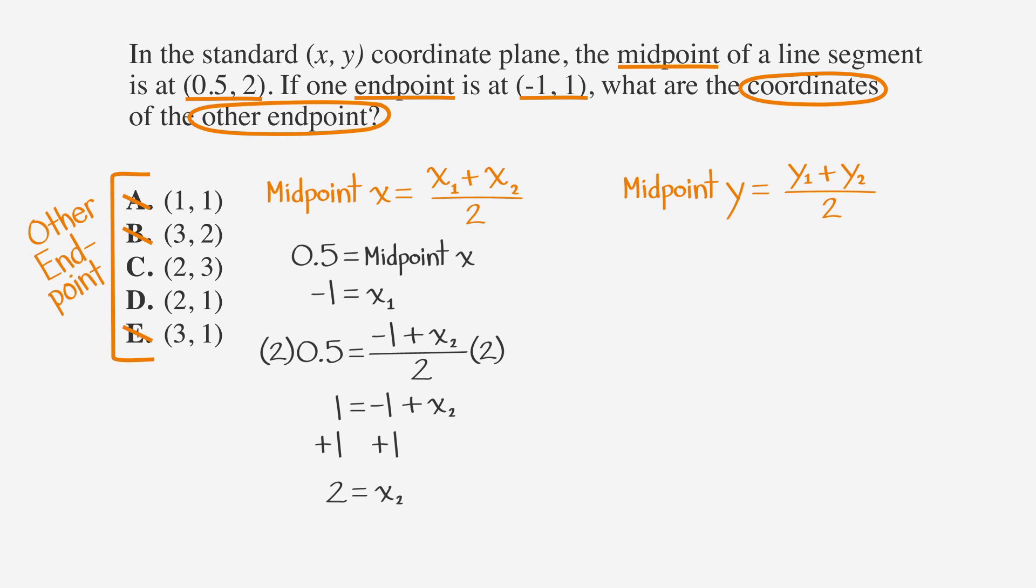Now let's solve for y. Midpoint y equals y1 plus y2 over two becomes two equals one plus y2 over two. And if we solve for y2 by multiplying by two and subtracting one, we find that y2 equals three, which means that our answer is two comma three.